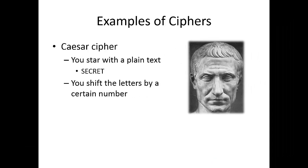Here is my favorite cipher or encryption example, which is a Caesar cipher. When using Caesar cipher, you start with a plain text and then you shift the letters of the plain text — each letter — by a certain number. We typically use the notation k to represent by how many letters we are shifting the original text. When k is, for example, 2, we also call this our encryption key.